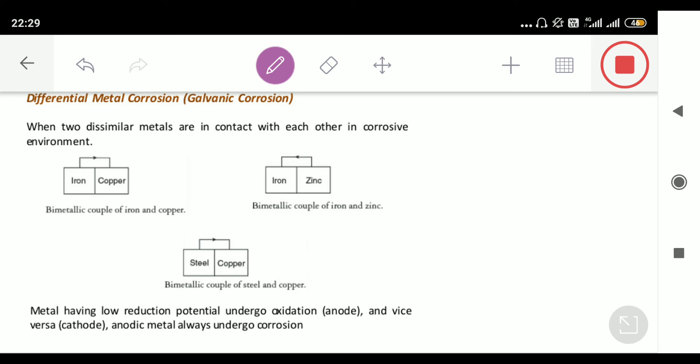That corrosion is called differential metal corrosion. Since we have two different electrodes in this corrosion, we can also call it galvanic corrosion.